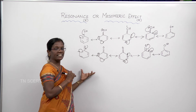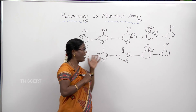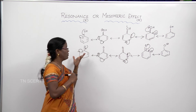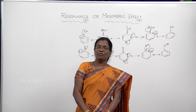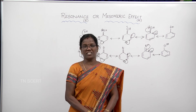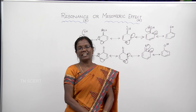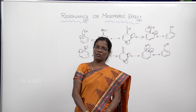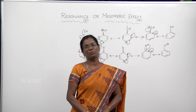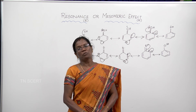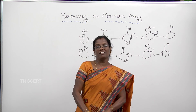From these resonating structures, we can understand that phenol has charge separation, giving it higher energy and making it less stable. But in phenoxide ion there is no such charge separation; therefore it is more stable, and hence phenol is acidic in nature. The concept of resonance or mesomeric effect helps us understand the chemical properties, stability, and reactivity of organic compounds very clearly.